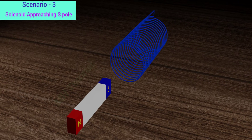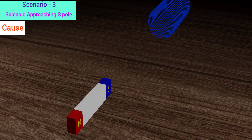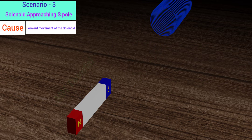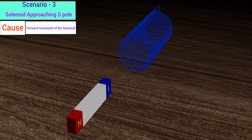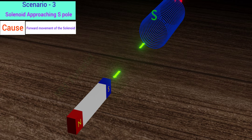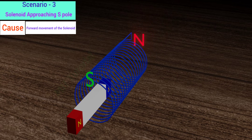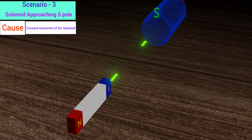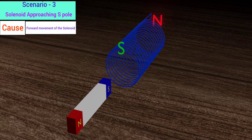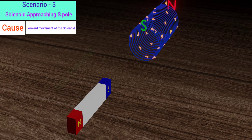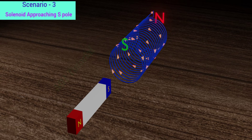Take the third scenario. Here, the cause of generation of the induced current is the advancement of the solenoid towards the south pole of the magnet. To counter its advancement, a repulsive force needs to be generated. To get repulsion, the solenoid should produce a south pole near the magnet. Hence, the direction of the induced current in the solenoid is clockwise.